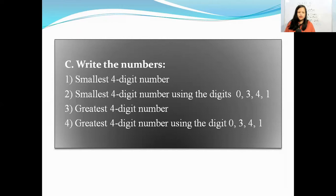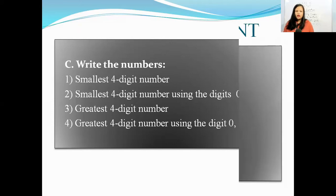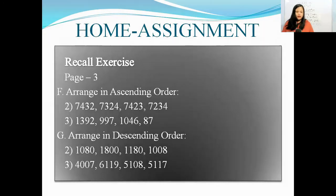3, greatest 4-digit number. 4, greatest 4-digit number using the digits 0, 3, 4, 1. And next is F, arrange in ascending order, question number 2 and 3. And G, arrange in descending order, question number 2 and 3.